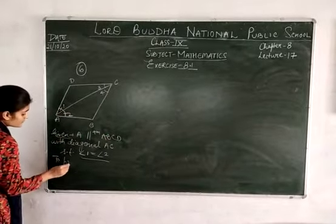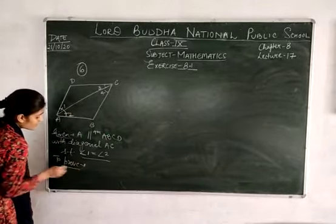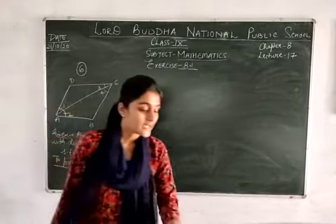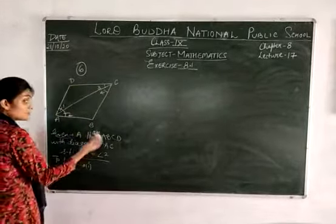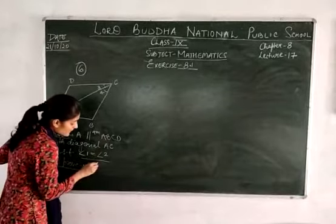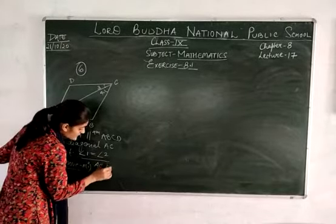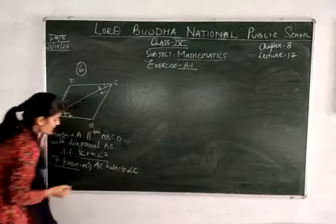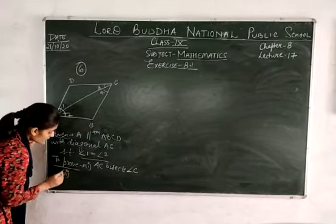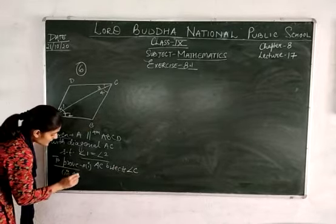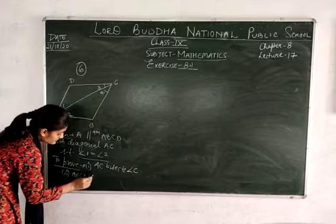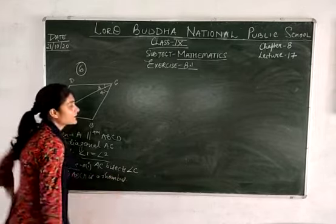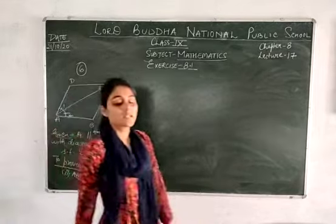What you need to prove is: first, that AC also bisects angle C; and second, that ABCD is a rhombus. To prove it is a rhombus, we need to show all sides are equal. So we need to prove all sides of this parallelogram are equal.